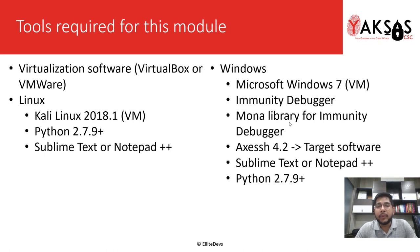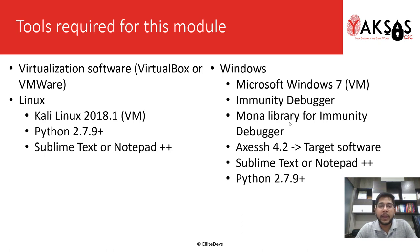For Windows we will be using Microsoft Windows 7 SP1 x86, and on this machine we will need Immunity Debugger, the Mona library for Immunity Debugger, and our target software will be Axe SSH 4.2. We will also need a text editor — either Sublime Text or Notepad++ — and Python 2.7.9 on this machine as well.